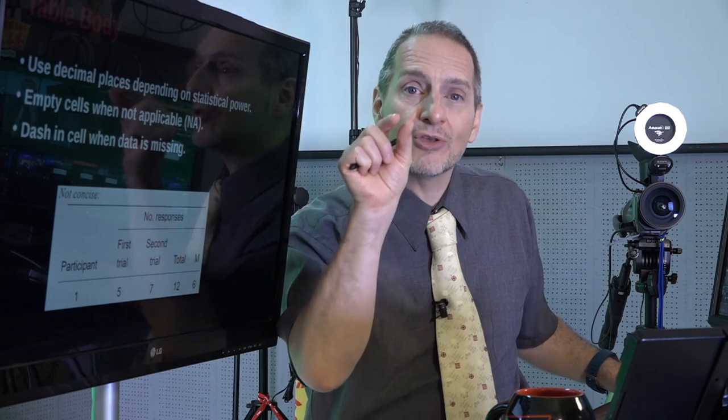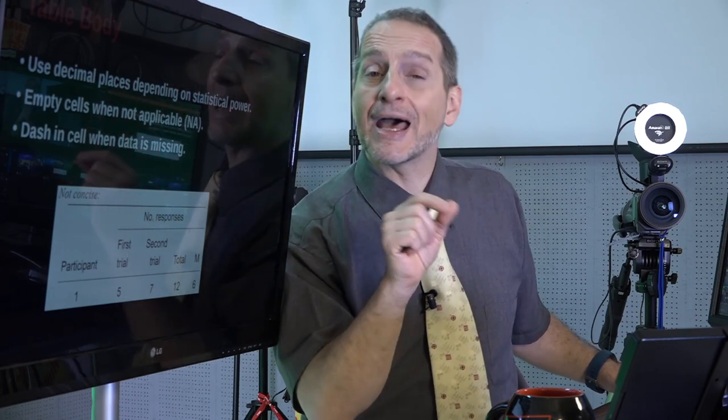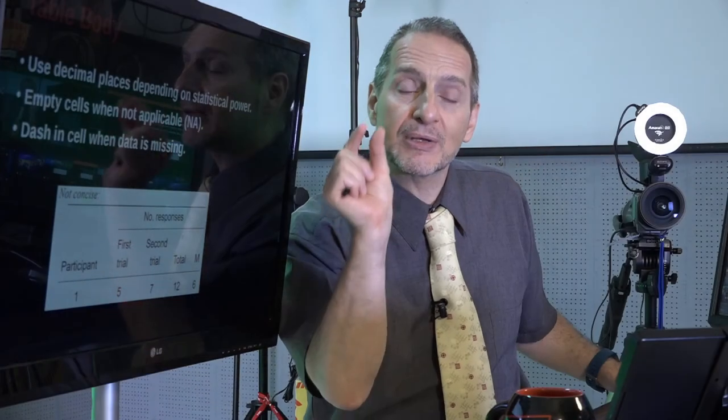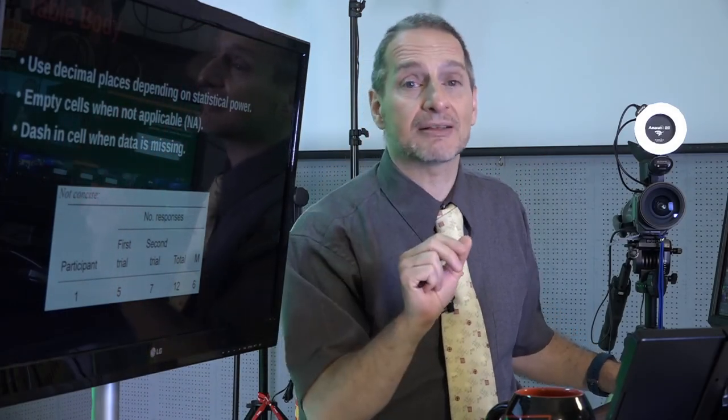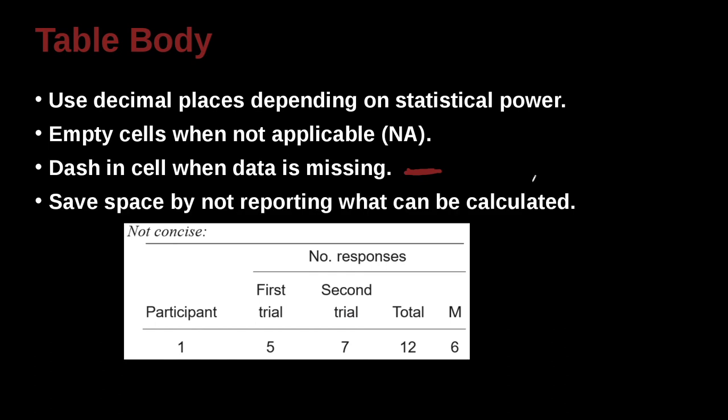In that case, that's not an empty cell. That's a cell where you should have data, but for some reason, there is no data. And maybe because nobody did it, nobody answered it, nobody answered that question, nobody performed that activity. But that cell is not empty. It's just lacking data, missing data, basically. So if you're missing data, then you do not leave it empty. Rather, you go ahead and you use a dash inside that cell. And that symbolizes the data is missing.